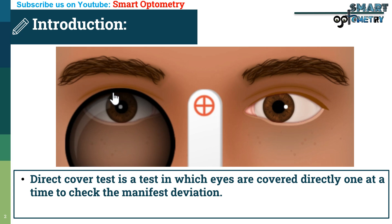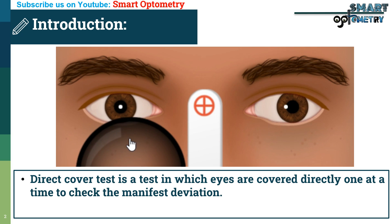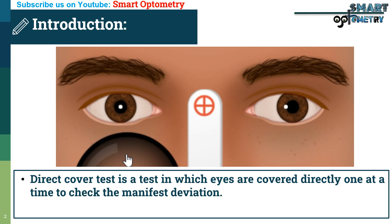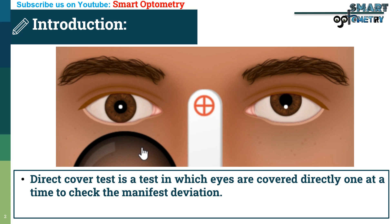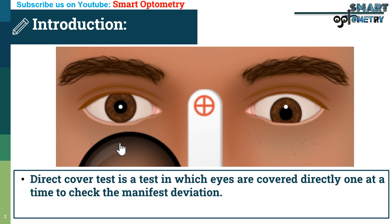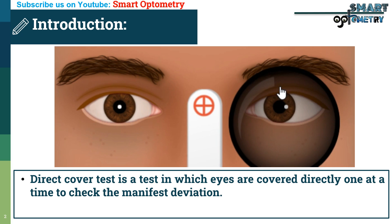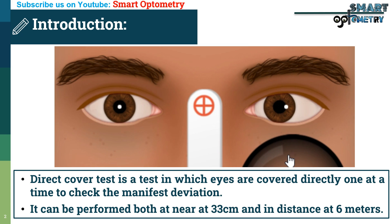If we close the fixating eye directly, then the deviated eye will move in the opposite direction to the deviation. If the eye moves in — that is, towards the nose — then it is exotropia. If the eye moves out — away from the nose — then it is esotropia. If the eye moves down, it is hypotropia. If the eye moves up, it is hypertropia. If we close the deviating eye directly, there will be no movement in the fixating eye. The test can be performed both at near, at 30 cm, and at distance, at 6 m.